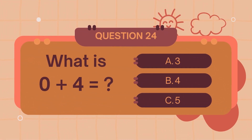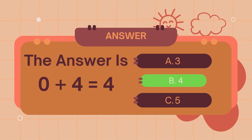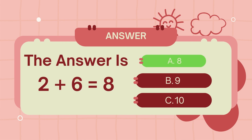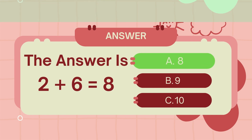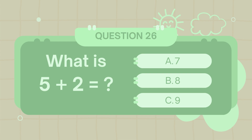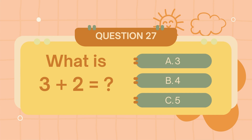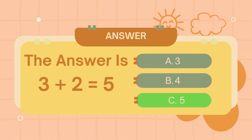What is 0 plus 4? What is 4? The answer is 4. What is 2 plus 6? What is 6? The answer is 8. What is 5 plus 2? What is 3 plus 2? The answer is 7.